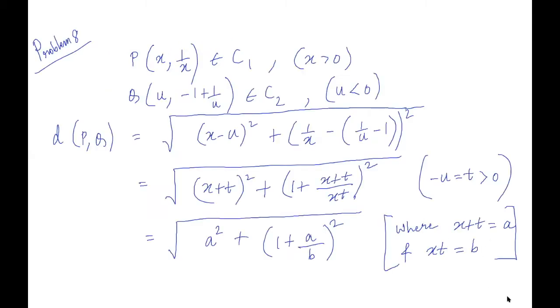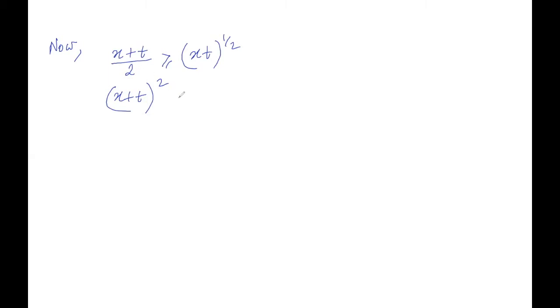Now we will apply AM-GM inequality on x and t since they are both positive reals. So we can apply AM-GM inequality: (x + t)/2 is greater than or equal to the square root of xt. And that is nothing but (x + t) squared, remember we need x plus t whole square here, so that's a squared, and that's coming out to be 4 times xt. And so replacing again x plus t by a, so a squared is greater than or equal to 4b. So from here we can say that a/b is greater than or equal to 4/a.